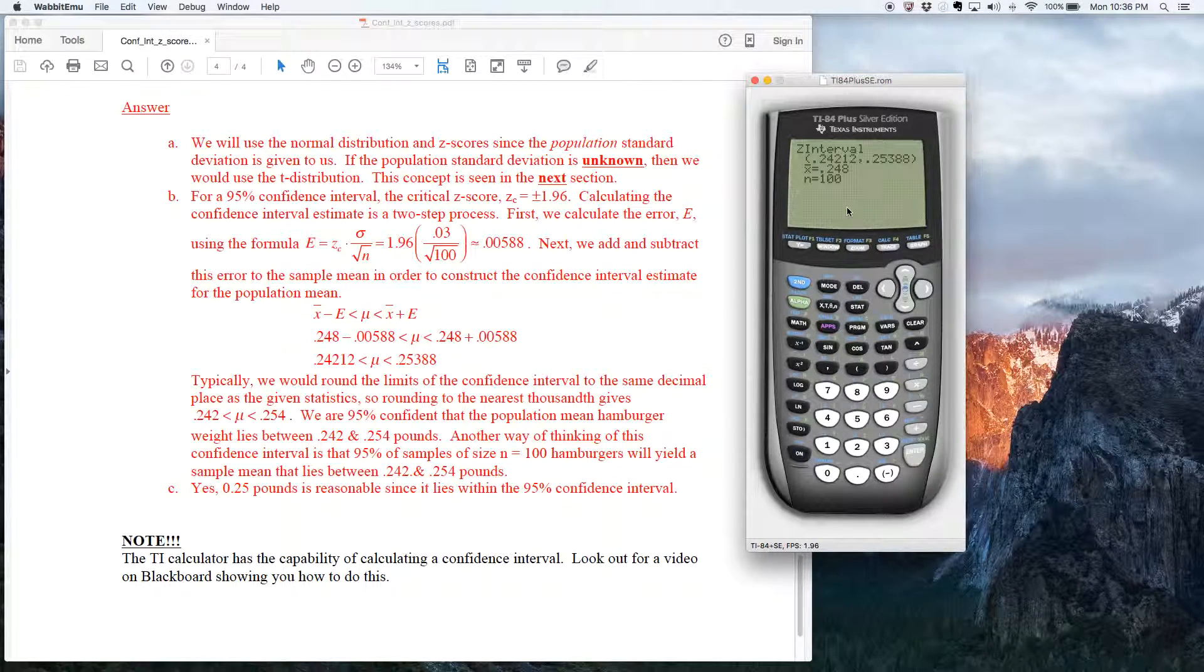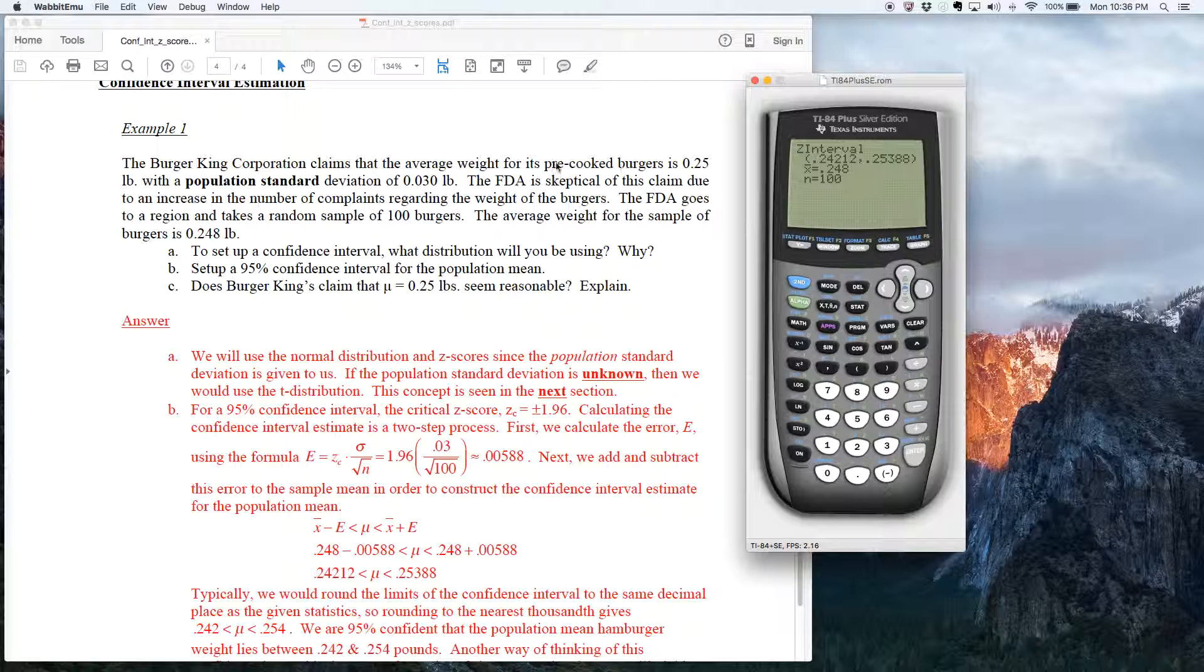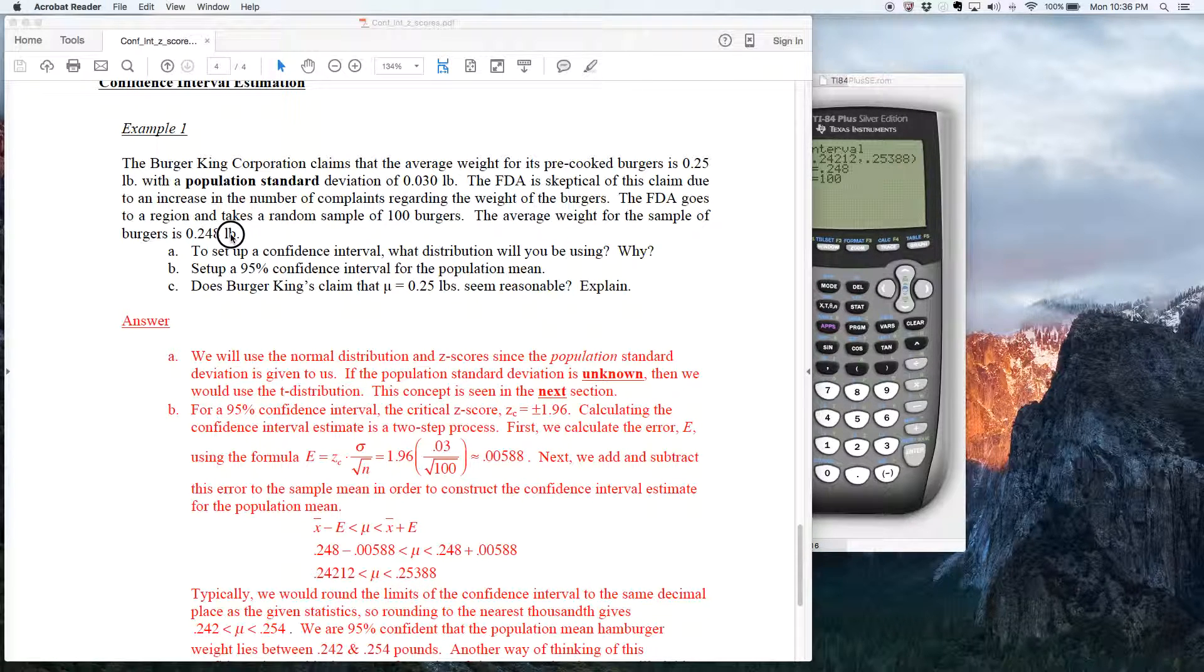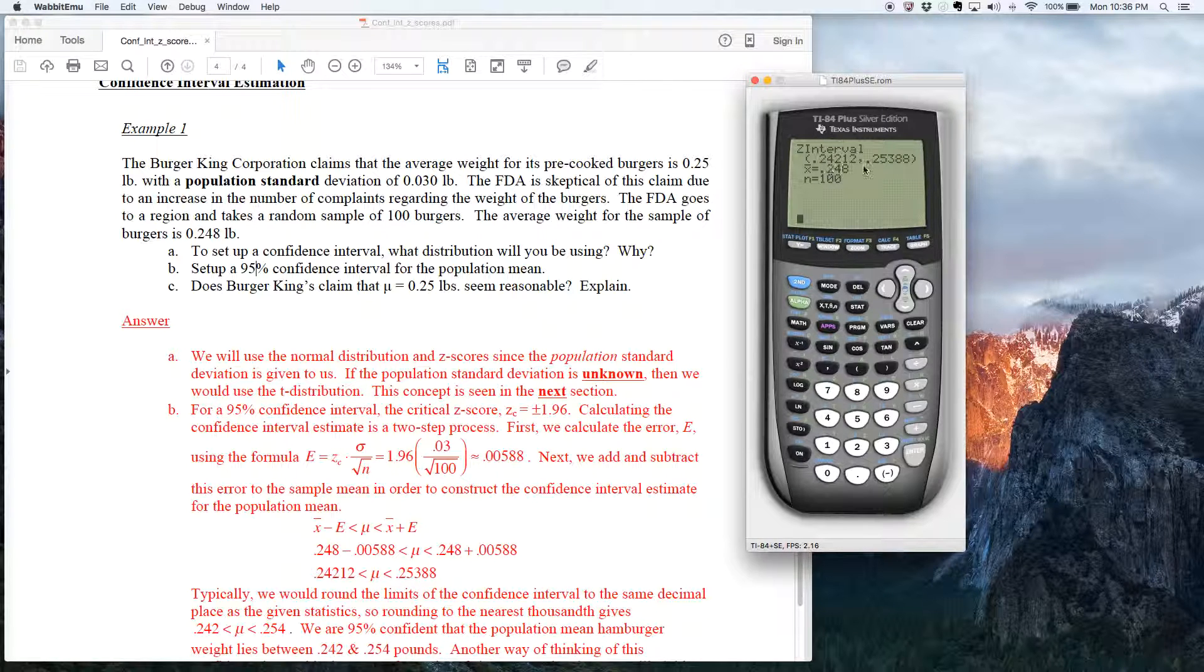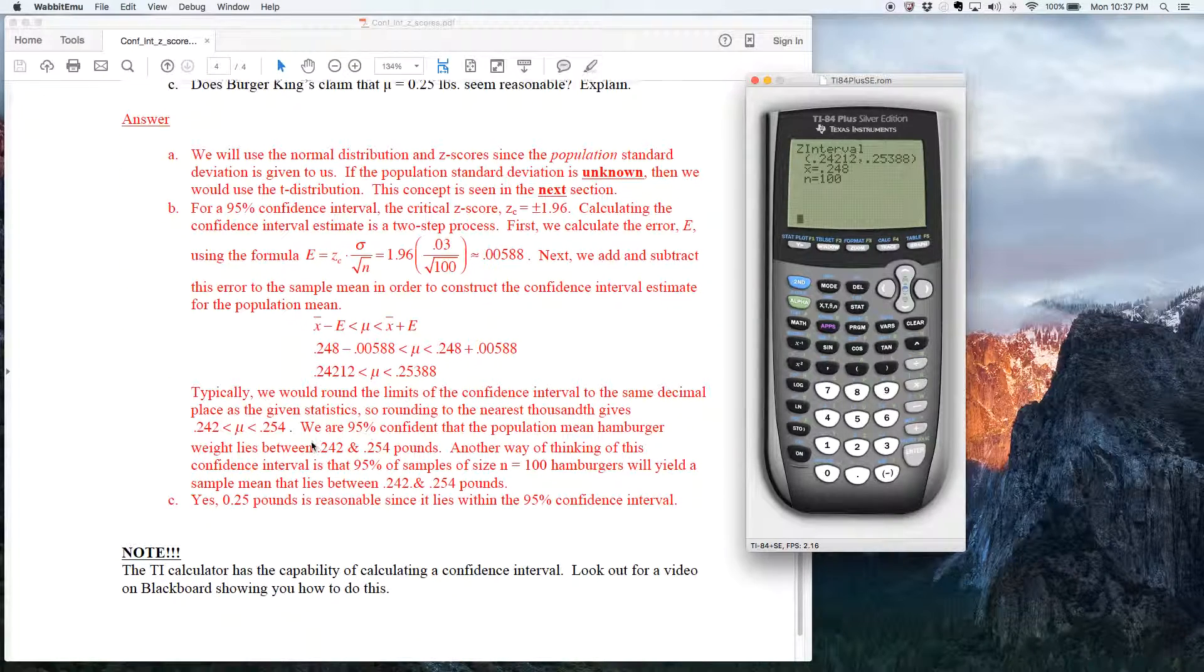So if I hit enter, 0.24212, 0.24212, 0.25388, 0.25388. And then of course, at this point, you could round to whatever decimal place that you need to. Typically, you would look at your statistics and whatever statistic has the most place values, which I believe is right here, this sample mean 0.248. Notice how it has three decimals. So typically you would round your answer for your confidence interval to three decimal places because of that. And that's what I did down here.